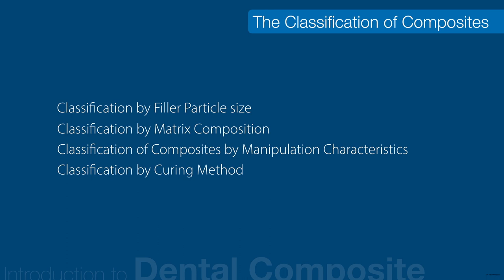Composites can also be defined on the basis of matrix composition — whether containing Bis-GMA, UDMA, or Bis-EMA — or by polymerization method: self-curing, UV light-curing, visible light-curing, or dual-curing composites.